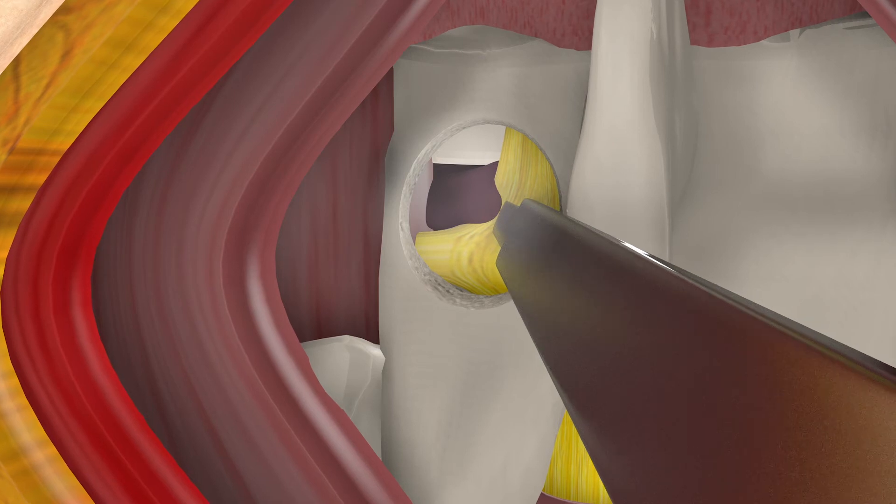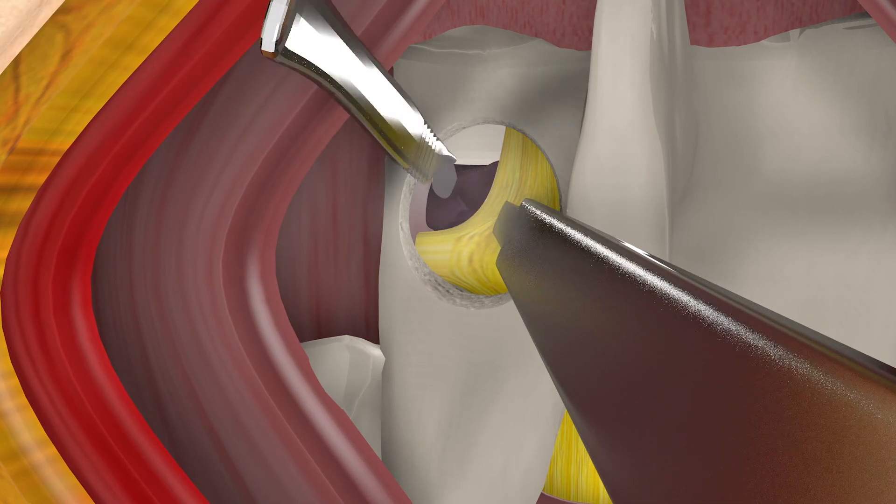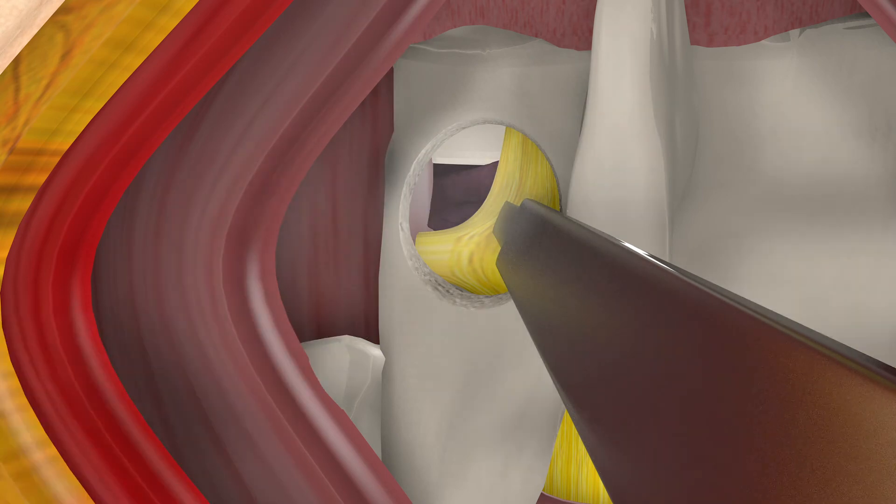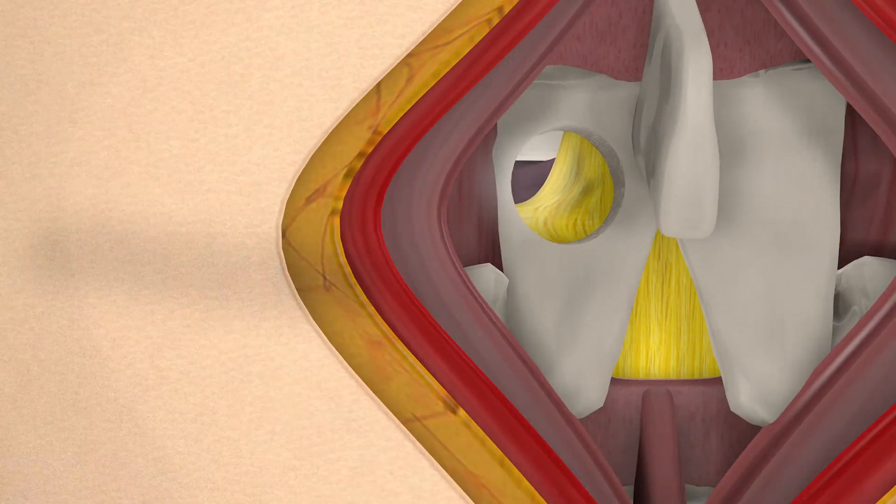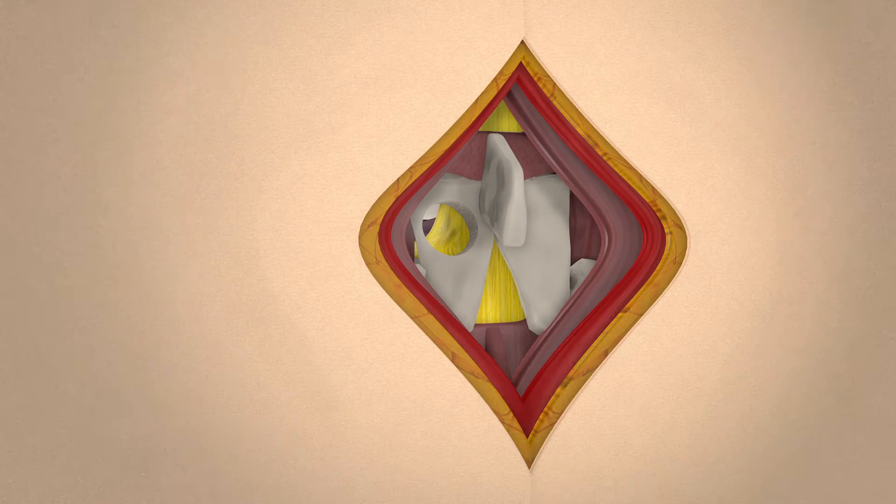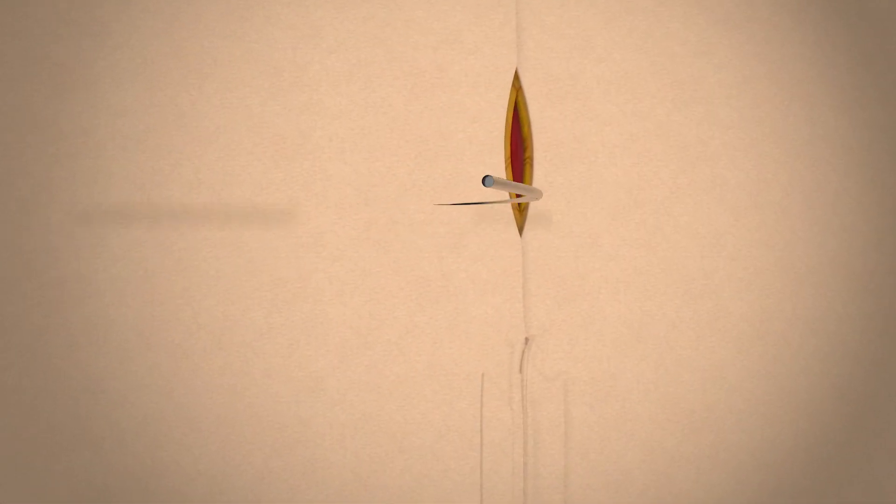Once this is found, the surgeon will use a surgical knife of their choice to cut the herniation out. Once all excess tissue is removed, the patient is closed back up with dissolvable stitches.